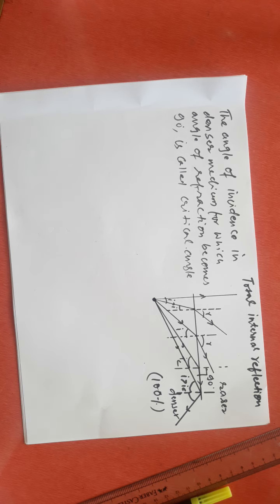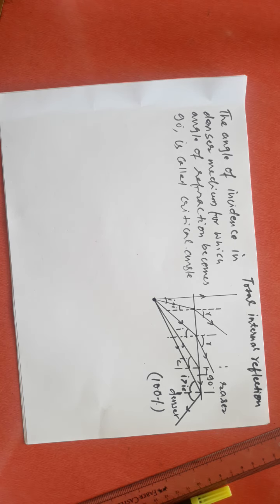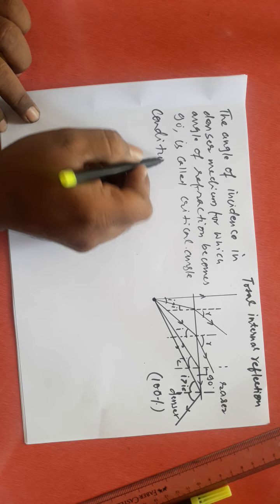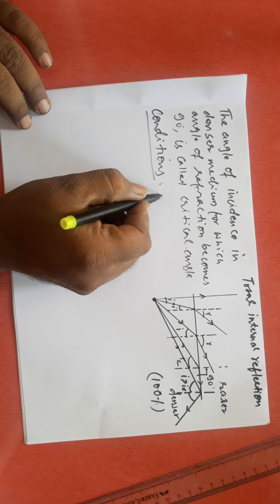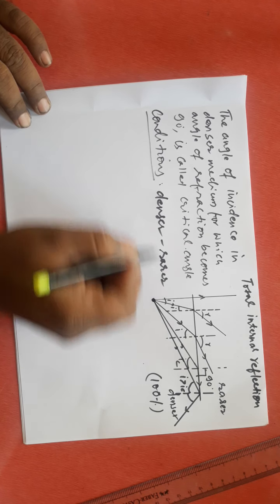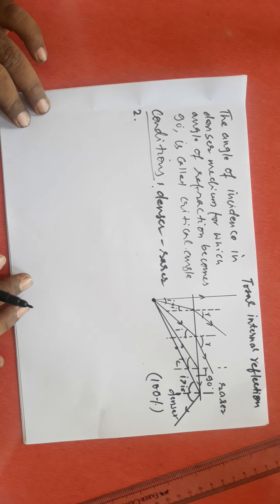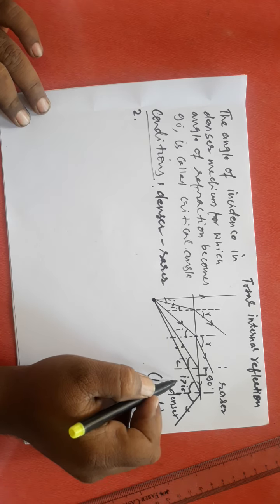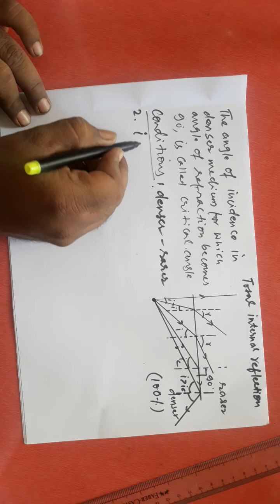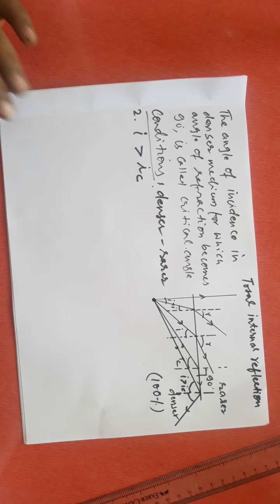What we understand from this observation is: if a ray of light is going from denser medium to rarer medium, total internal reflection may take place. Two conditions are very important for total internal reflection to take place. First condition: light must travel from denser to rarer medium. Second condition: the angle of incidence at that point should be more than the critical angle. If these two conditions are satisfied, total internal reflection takes place.